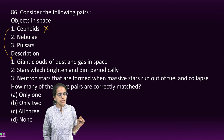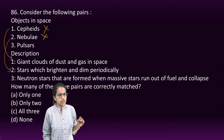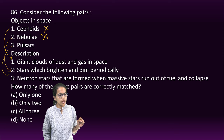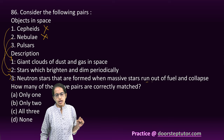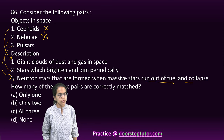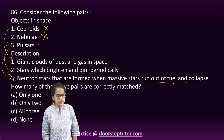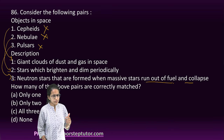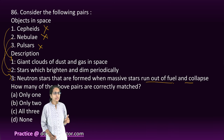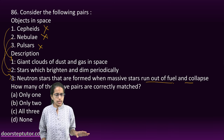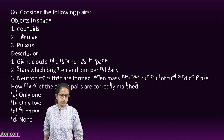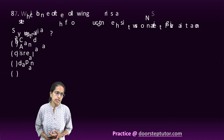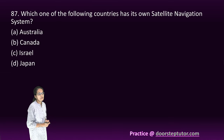Next, Cepheids are the stars which brighten and dim periodically — but the matching given is incorrect. A nebula is a giant cloud — again the choices have been mixed, so that is incorrect. Pulsars are rotating neutron stars, not massive stars that run out of fuel and collapse. All three are incorrectly matched, so none is the correct answer.